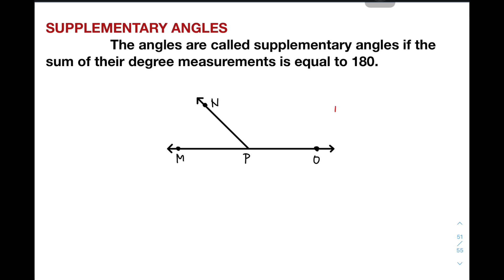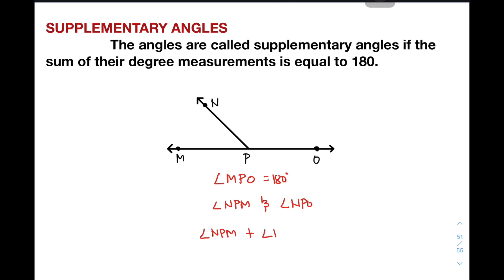As you can see in this illustration, I want you to focus on this straight angle. We have angle MPO, which is a straight angle equivalent to 180 degrees. Inside it, there are two angles that make up angle MPO. When you add angle NPM and angle NPO, it gives you the sum of 180 degrees.